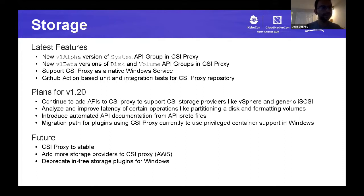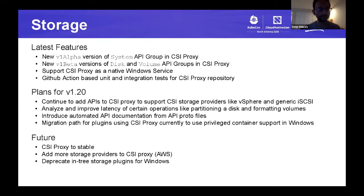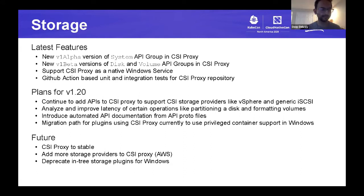Plans for v1.20 include continuing to add APIs to CSI Proxy to support the vSphere plugin and a generic iSCSI plugin on Windows. We want to analyze and improve latencies when performing Windows operations such as partitioning and formatting volumes. We also plan to introduce automated API documentation generated directly from the API proto files, and investigate a smooth migration path from CSI Proxy to the future privileged container support in Windows.